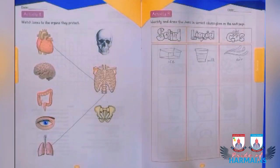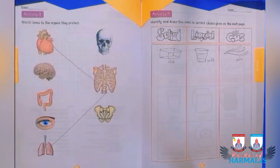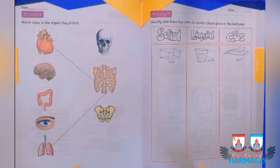Activity number eight from Class 4: here you have to match bones with the organs they protect. Every bone and organ has an important function in our body — for example, the heart has the important function of transporting blood throughout the body.